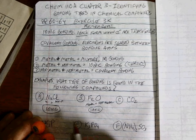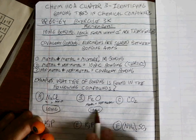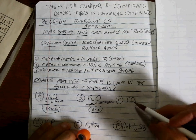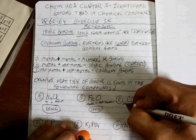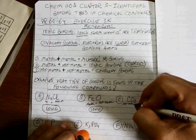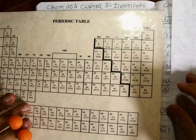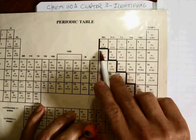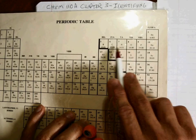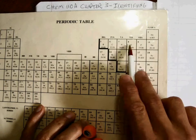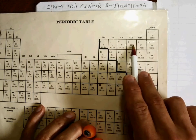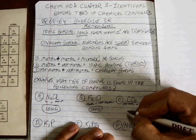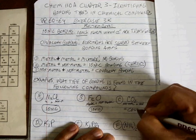We're not asking what the charges are, just simply identify the type of bonding. Carbon is a non-metal — it's clearly on the right side of the stair steps on the periodic table. Oxygen is also on the right side, so it's also a non-metal. Non-metal plus non-metal equals covalent bonding.